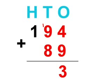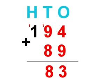Then you have to do the tens column, which is 9 plus 8 plus the carried over 1, which equals 18. You put the 8 in the tens column and carry out the 1 into the hundreds column.